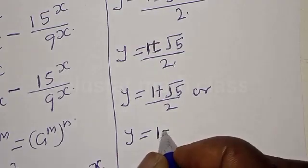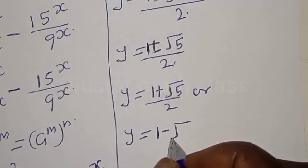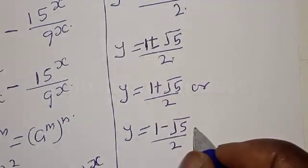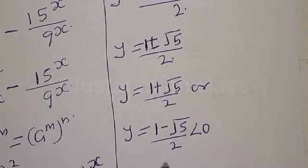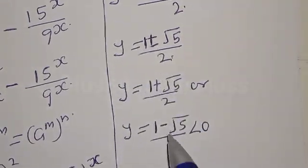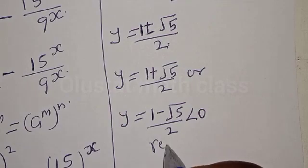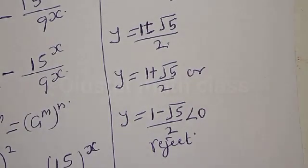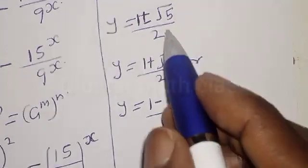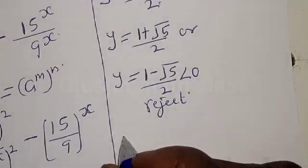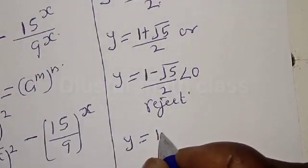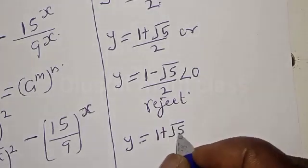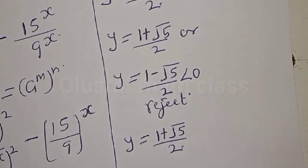Then we have y is equal to 1 plus square root of 5 divided by 2, or y is equal to 1 minus square root of 5 divided by 2. This second solution is less than 0, and since y is greater than 0, we reject this solution.